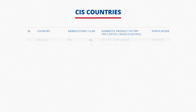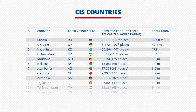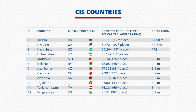The so-called CIS region includes 12 member states: Russia, Ukraine, Kazakhstan, Uzbekistan, Moldova, Belarus, Azerbaijan, Georgia, Armenia, Tajikistan, Turkmenistan, and Kyrgyzstan.